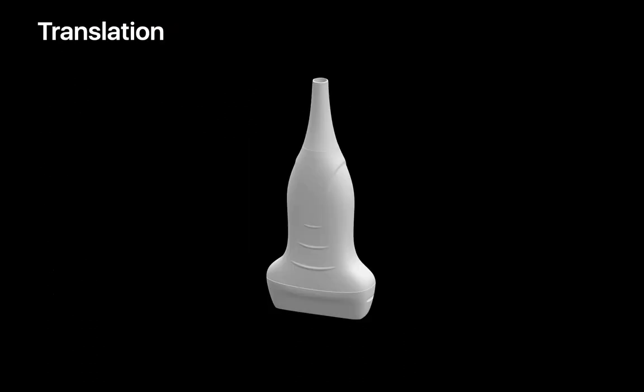With translation, the head of the probe will move from one place on the patient's skin to another. You can move in the x-axis or y-axis parallel to the patient's skin surface. And you can move in the z-axis perpendicular to the patient's skin surface.